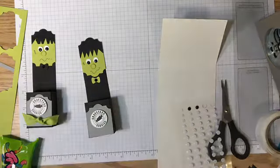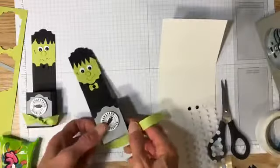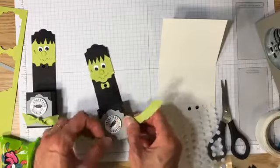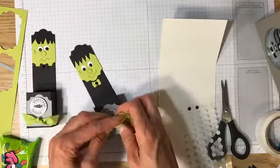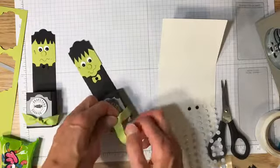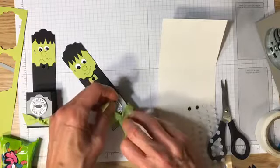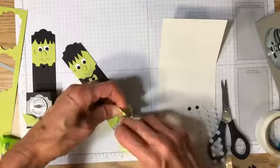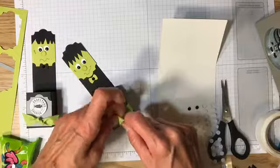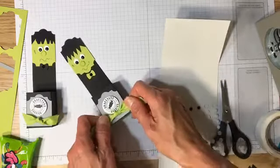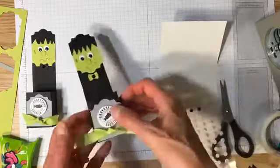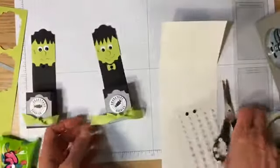And then we're going to take our ribbon again, lemon lime twist to match our rest of our lemon lime twist on our project and just tie this in a knot. And then we're ready for the best part, which is the candy. Even though they're sour gummy worms, which are not my favorite. Although my son loves sour gummies. So there we go. And I'm just going to trim the ends of that ribbon.